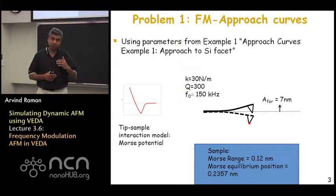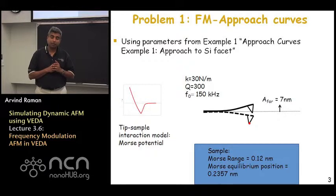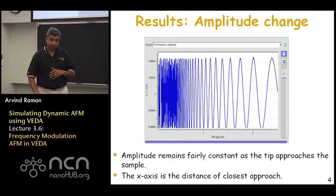We are going to approach the sample and in frequency modulation AFM, just to remind you, we are going to approach the sample with two feedback loops on. One is the phase lock loop which changes the drive frequency in a manner that the phase lag remains fixed at the value of 90 degrees as you approach the sample. The second feedback loop that is active is that the drive or the excitation force changes to keep the amplitude constant as you approach the sample. So both of these are active together.